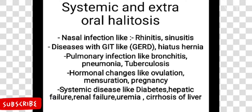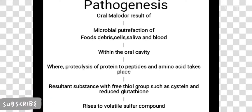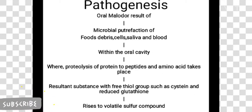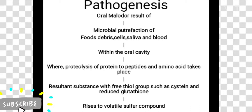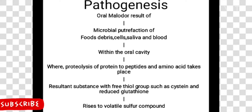Further systemic causes include hormonal changes like ovulation, menstruation, and pregnancy, and systemic diseases like diabetes, hepatic failure, renal failure, uremia, and cirrhosis of the liver. The pathogenesis of oral malodor results from microbial putrefaction of food debris, cells, saliva, and blood within the oral cavity, where proteolysis of protein to peptide and amino acid takes place.